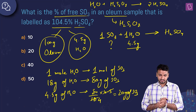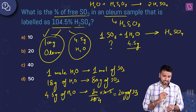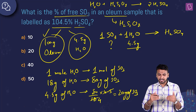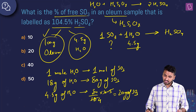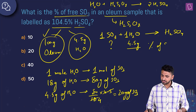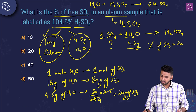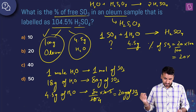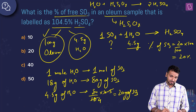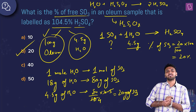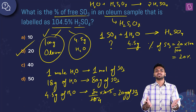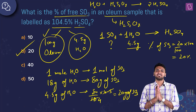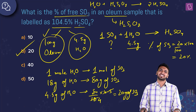The percentage of free SO₃ is 20%, and option B is the correct answer to this question.